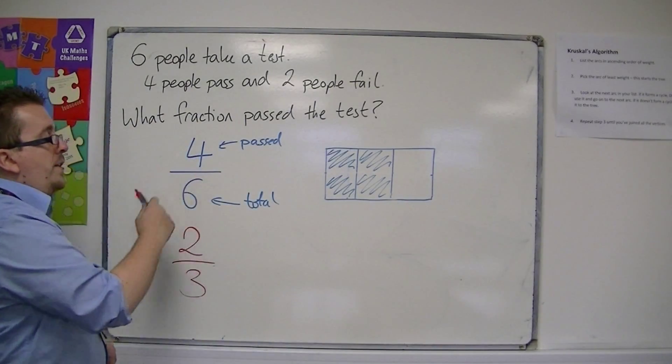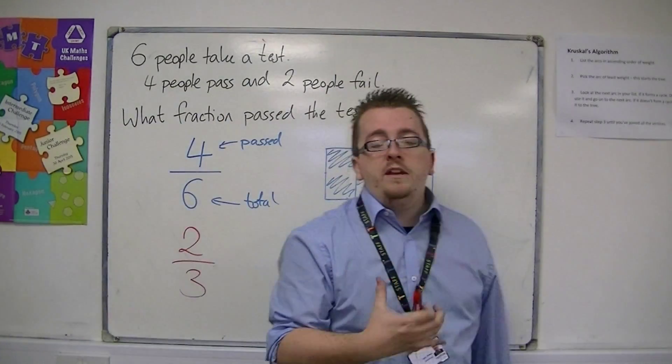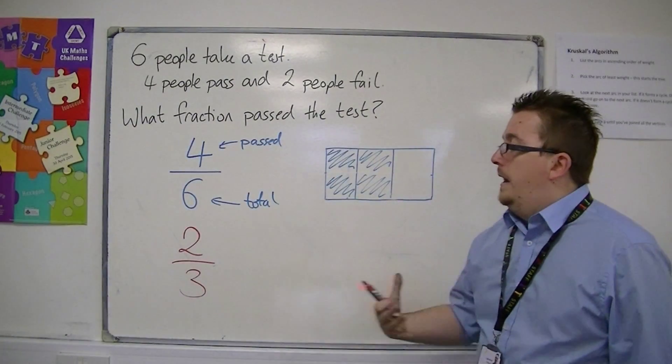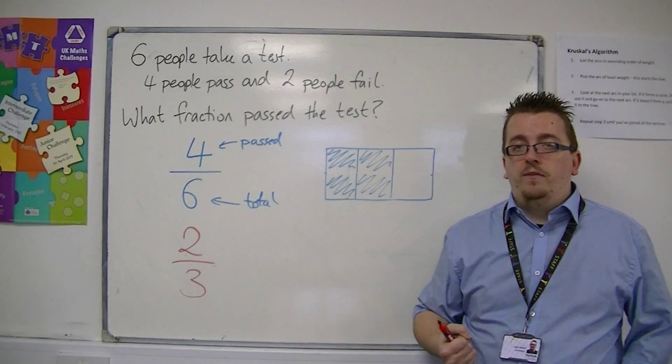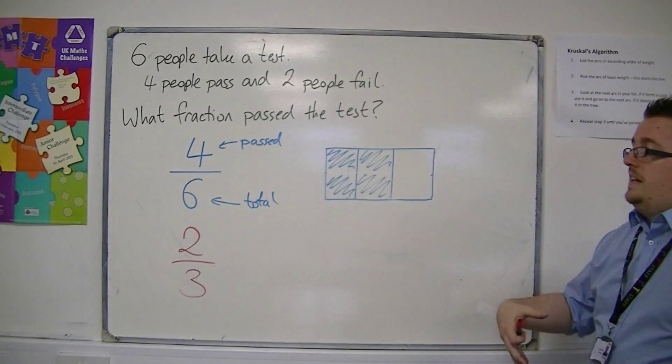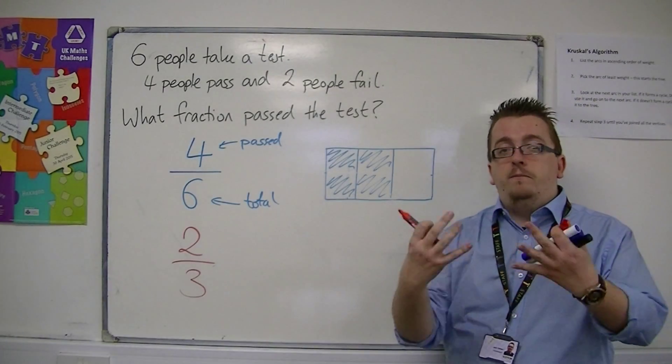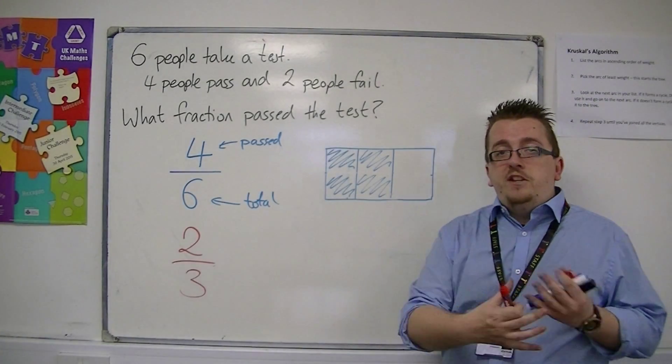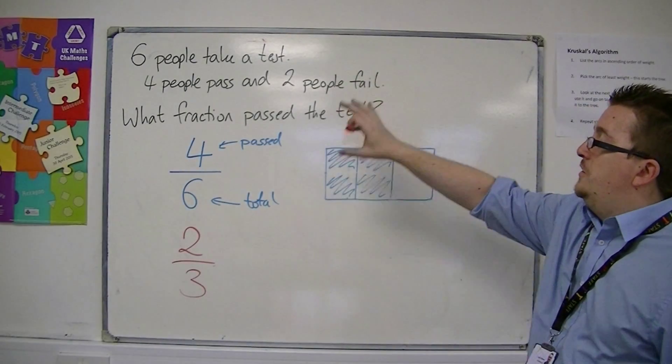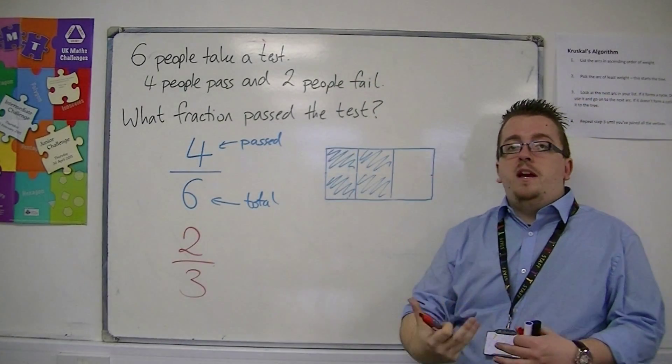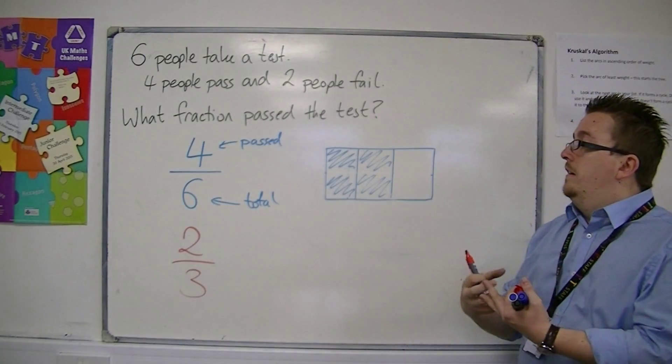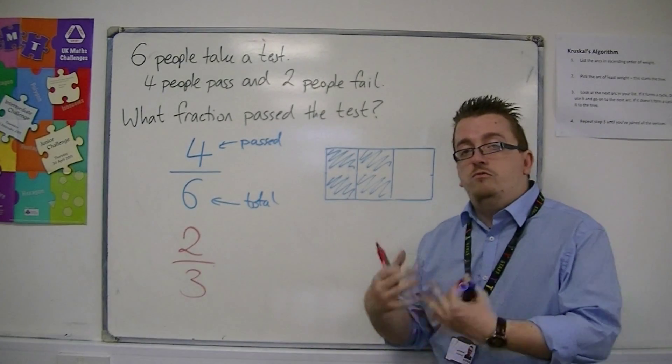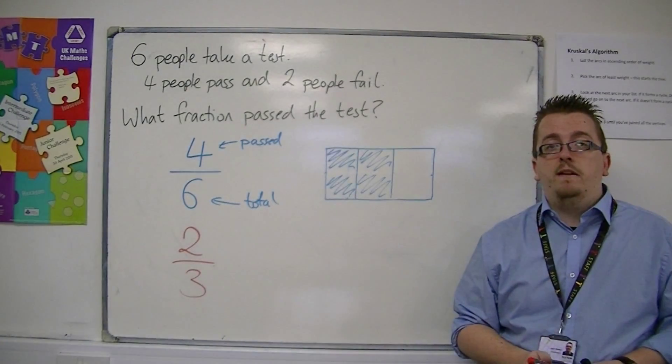And so what this is going to lead into is what we mean by an equivalent fraction, and how we can identify when two fractions are equivalent. And this then leads into simplifying, canceling down, and everything else. So you need to be able to turn a word problem into a fraction, and you also need to be able to shade a shape given on how many parts you need to shade to represent the fraction correctly. All right. Thank you.